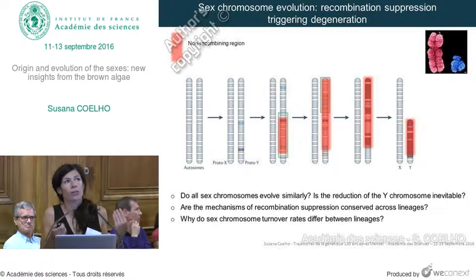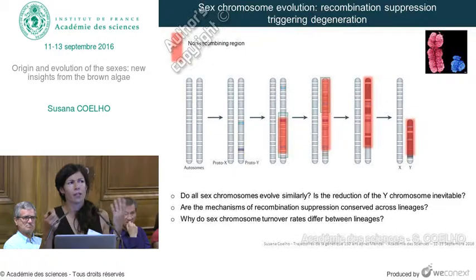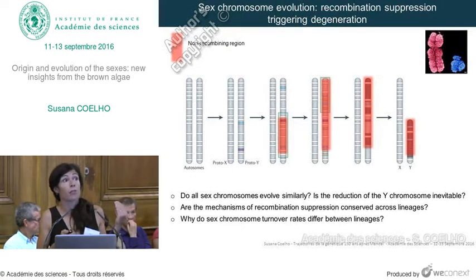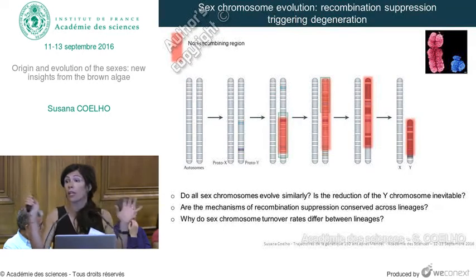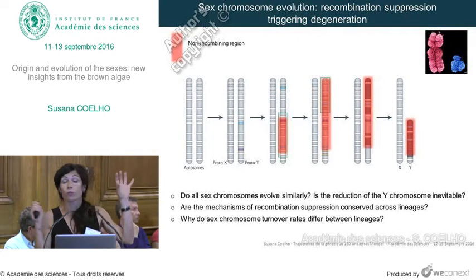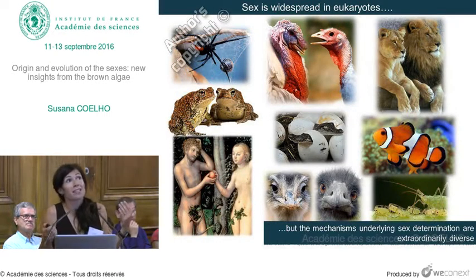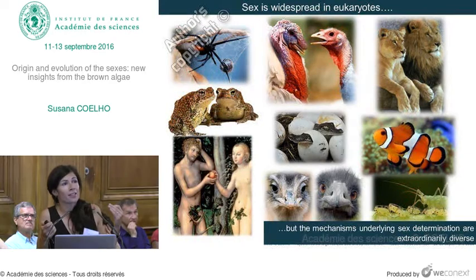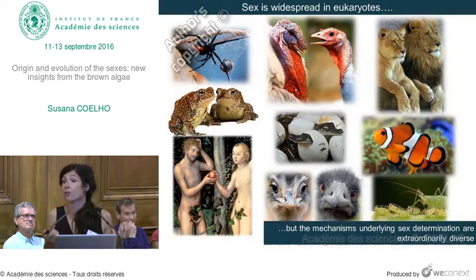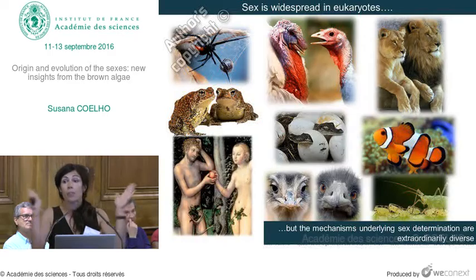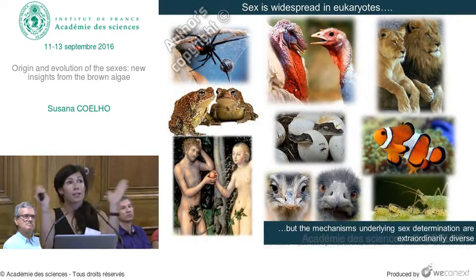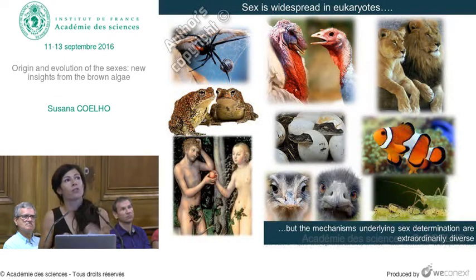Are the mechanisms of recombination suppression in the initial stages of sex chromosome evolution conserved across lineages? Why is it that some sex chromosomes are very stable, like human sex chromosomes, but others have huge turnover — like frog sex-determining regions, where in different populations of the same species, different chromosomes determine sex? People are starting to realize that despite meiotic sex being very conserved across eukaryotes, the mechanisms of differentiation between male and female are extremely diverse.